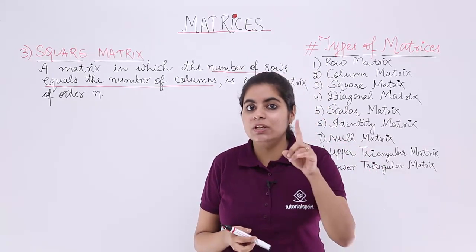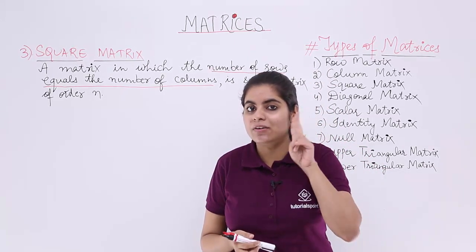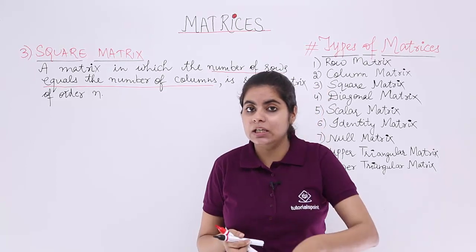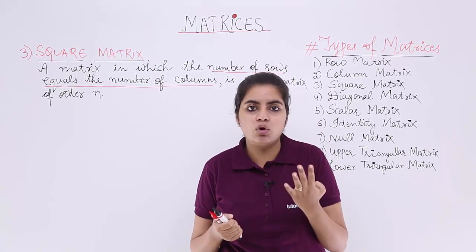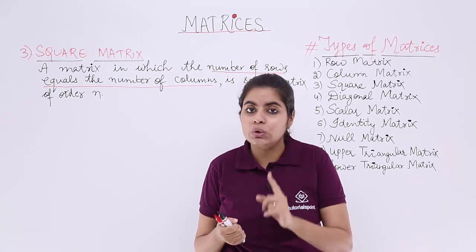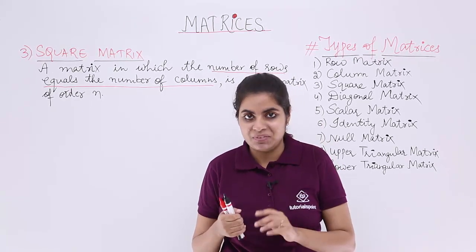What happened in the row matrix? Only one row. What happened in the column matrix? Only one column. But here the number of rows and columns are same. So if there are four rows, there will be four columns only. If there are two rows, there will be two columns only.